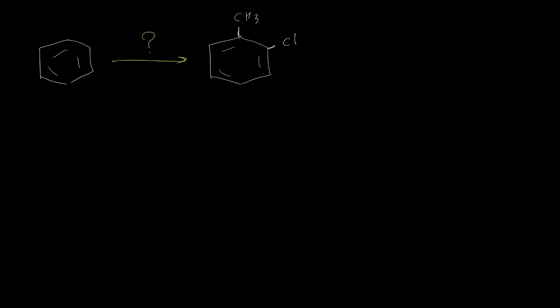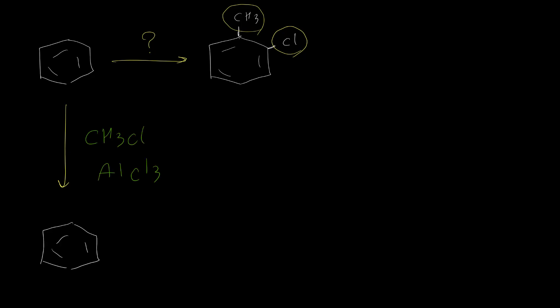Until now, all examples were about synthesis of para or meta products. In this problem, I would like to explain how we can synthesize an ortho product. If we perform reactions regardless of sequence for chlorination or Friedel-Crafts, we can have ortho product, but the major product most of the time is para. The percentage of ortho product is low due to the steric effect between two groups that are close on the benzene ring.